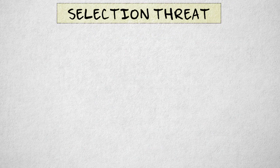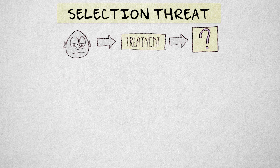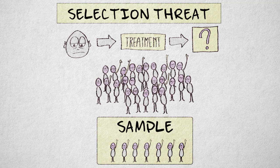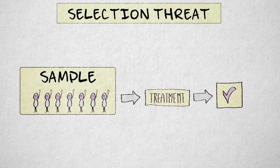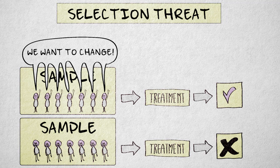Selection is a final and very important threat to external validity. A selection threat occurs when the hypothesized relation only holds for a specific subset of people, or if the results in our study are biased due to over- or under-representation of a certain subset. Suppose that in our study on a new depression therapy, we recruited participants who actively volunteered. It's entirely possible that the method is ineffective for people who are less proactive, and the over-representation of volunteers might lead to an over-estimation of the therapy's effectiveness.